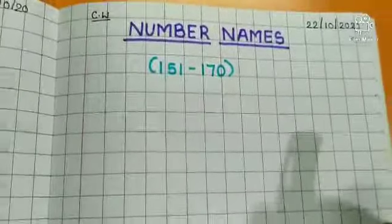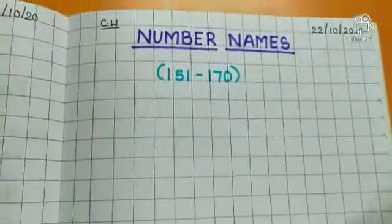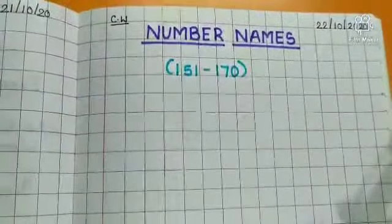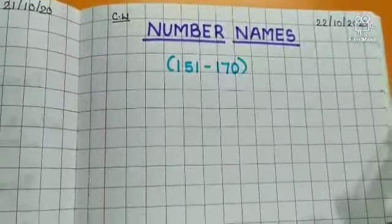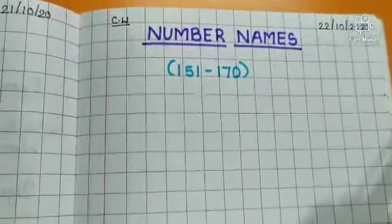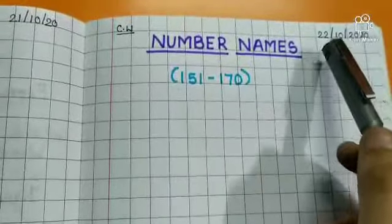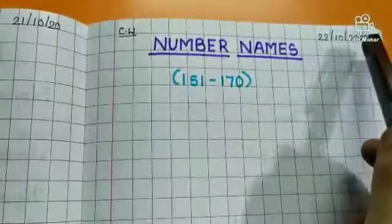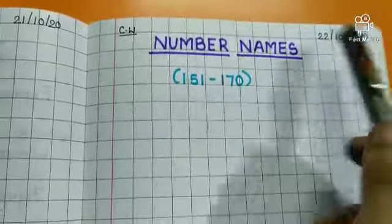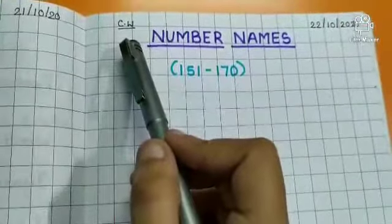Good morning class, how are you all? I hope you all are fine. So class, this is your maths period. Take out your maths notebook and put today's date: 22nd of October 2020. Then write down classwork.